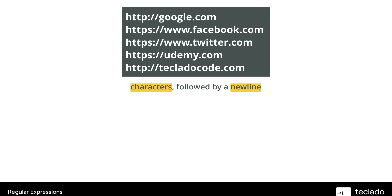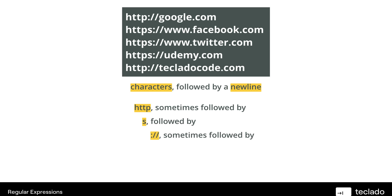In the other pattern, where you analyze each line, you can see that every line is fairly similar to the line below. All of these lines have HTTP at the start. Sometimes HTTP is followed by an S — in three of the cases you've got HTTP followed by an S. And in all cases, that is then followed by colon, forward slash, forward slash. Sometimes that is followed by www, and that is followed by some characters like Google, Facebook, Twitter, Udemy, Teclado Code. And finally, this is always followed by .com.